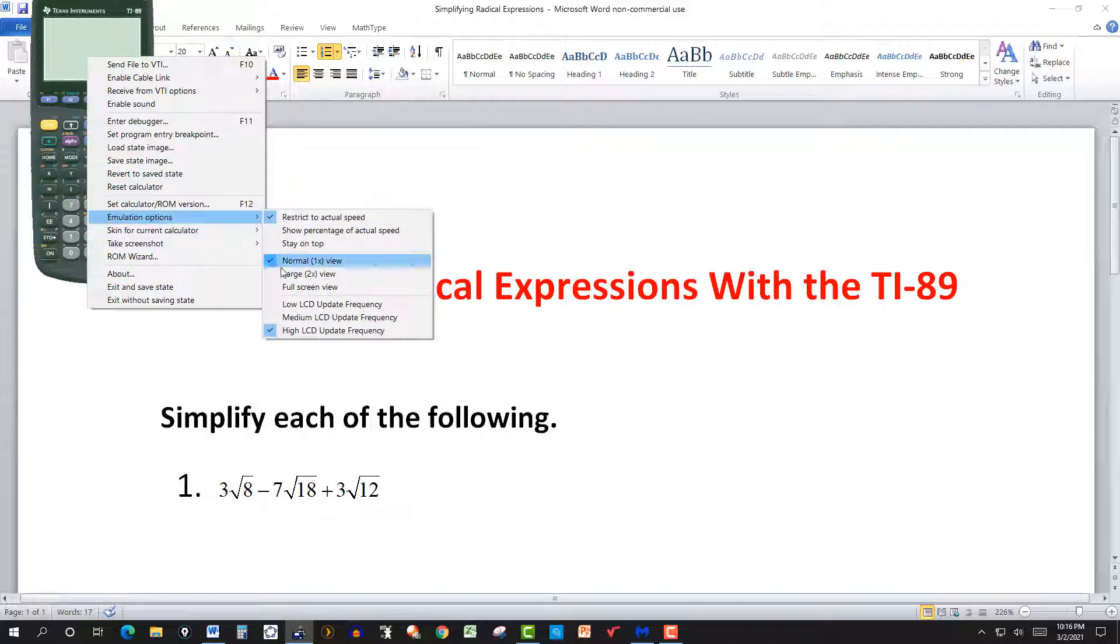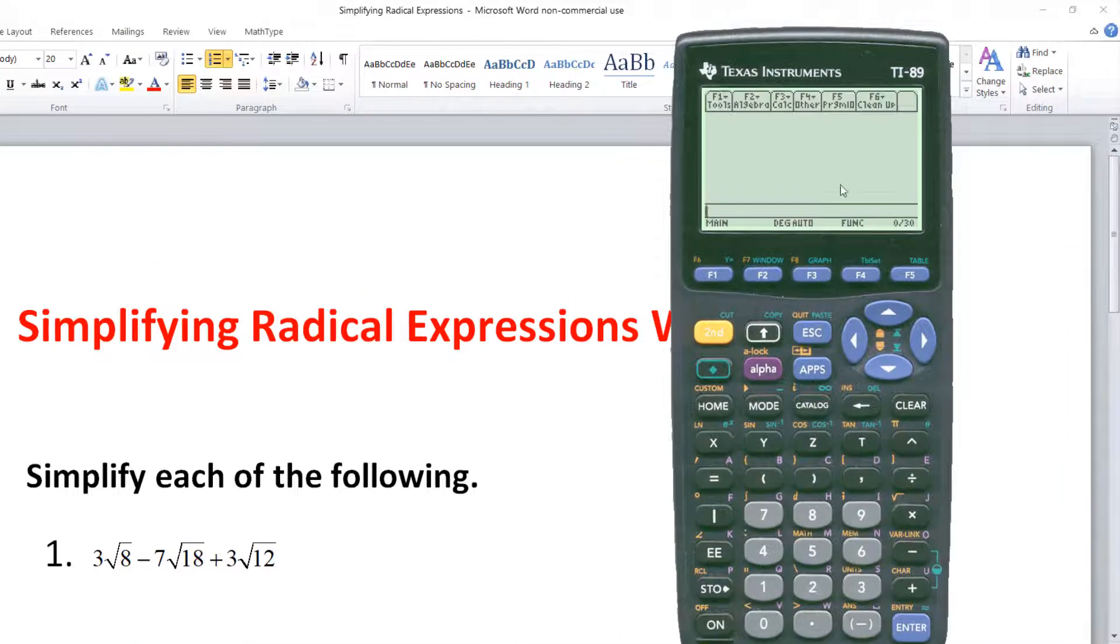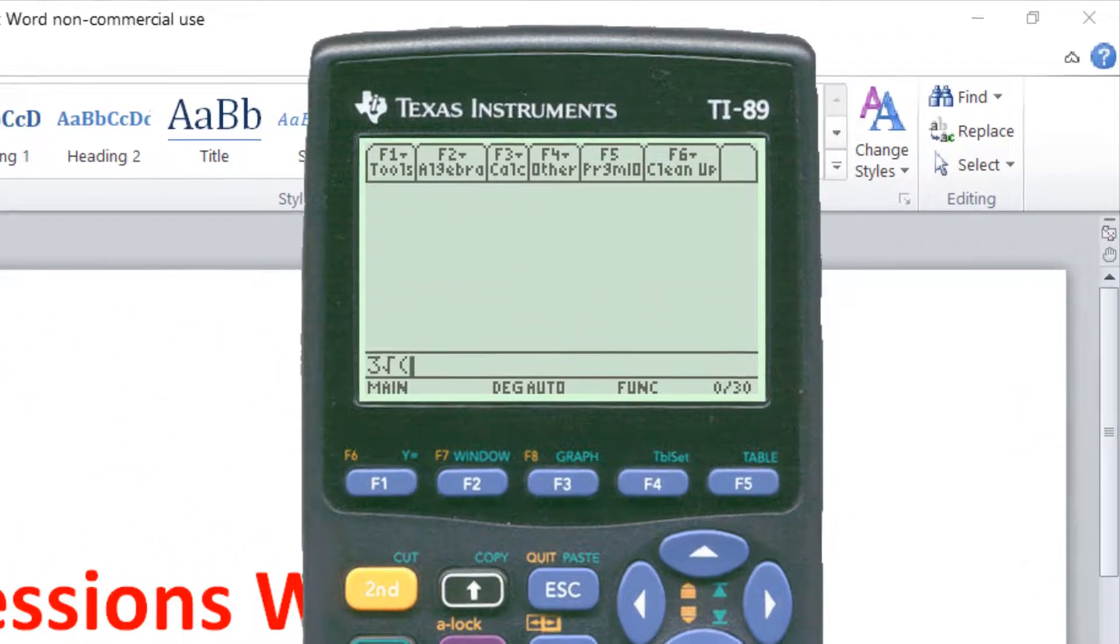Just a little bit larger here. So we did it manually last time. Hopefully you saw the video. So in this case I am going to use the calculator. So we have 3 times the square root of 8 plus parentheses, minus 7 at the square root of 18 plus 3 times the square root of 12 plus parentheses. And then all we have to do is hit enter.